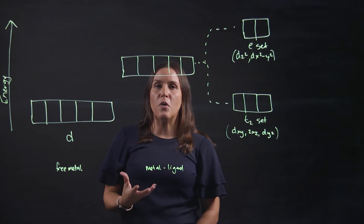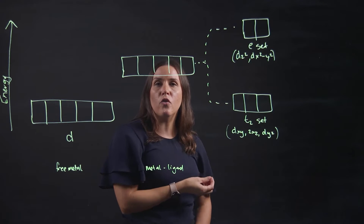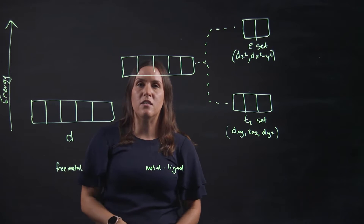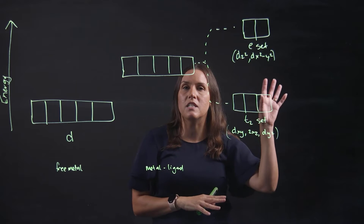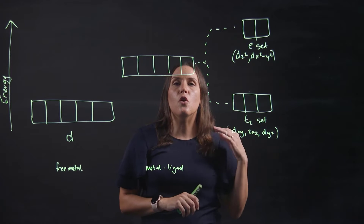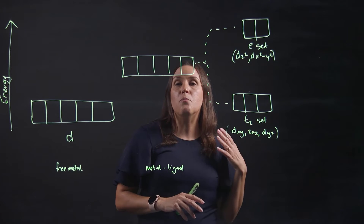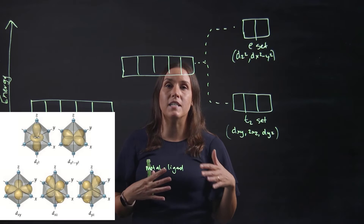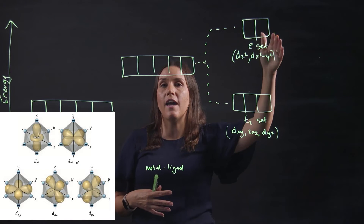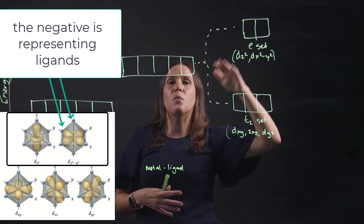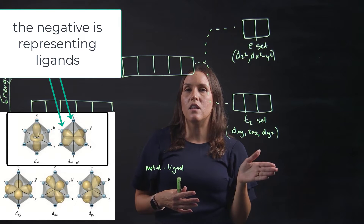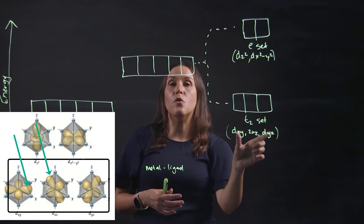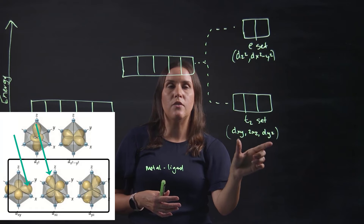Remember, the goal of bonding is to have a lower overall energy level. Based on crystal field theory, what actually happens is you have the splitting of the orbitals. The orbitals that are directly pointing towards the ligands and have the maximum repulsion will be at a higher energy level, and the ones pointing between the ligands — along the axes between the ligands — will have a lower energy level.